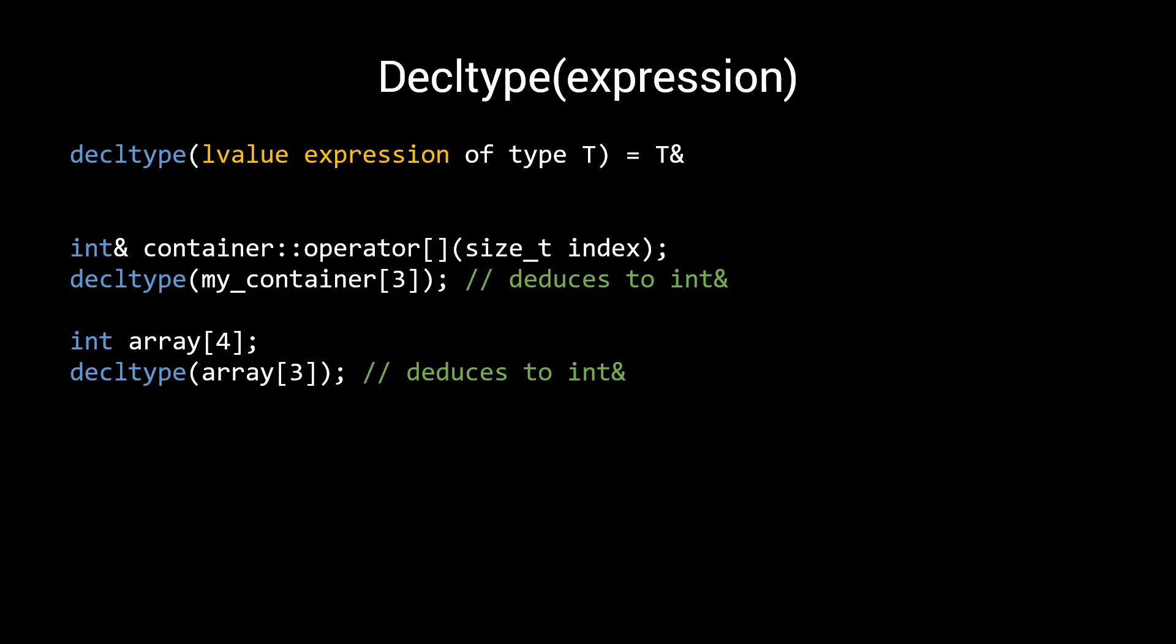Of course, strictly speaking, a name is also an lvalue expression. That's why the name rule gets priority in the case where your lvalue expression is only a name. Even though A is an lvalue expression, it is also a name, and hence it deduces to the declared type int, not a reference to int.